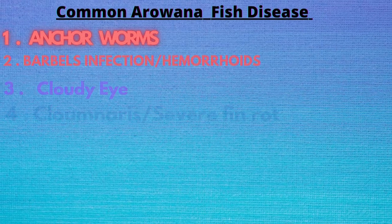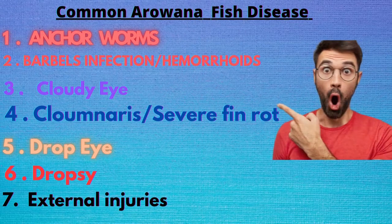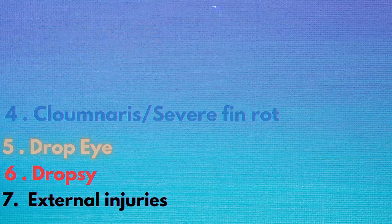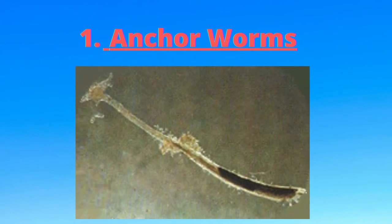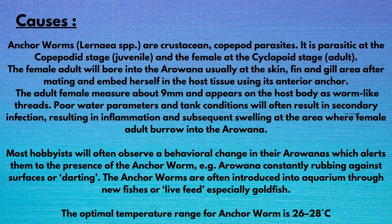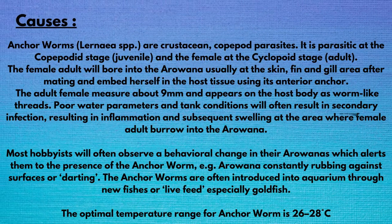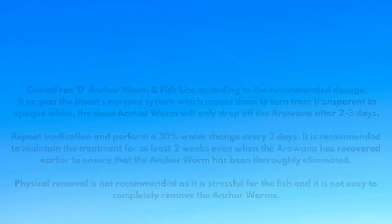Hi guys, welcome back. In this video we're going to talk about common heroin of fish disease. The first one is anchor bones, second is babel infection, third is cloudy eye, fourth is Paula Morris, fifth is drop eye, sixth is drop C, seventh is external injuries.